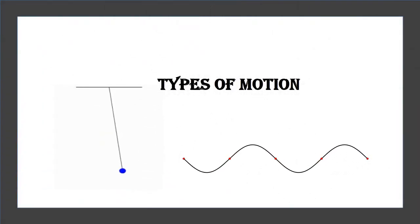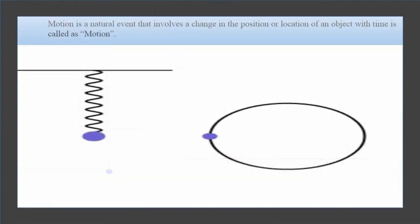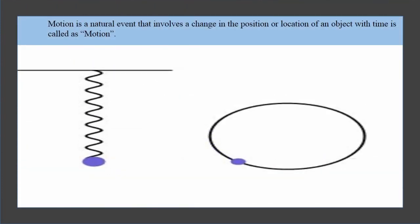Let's learn about types of motion. Motion is a natural event that involves a change in the position or location of an object with time.